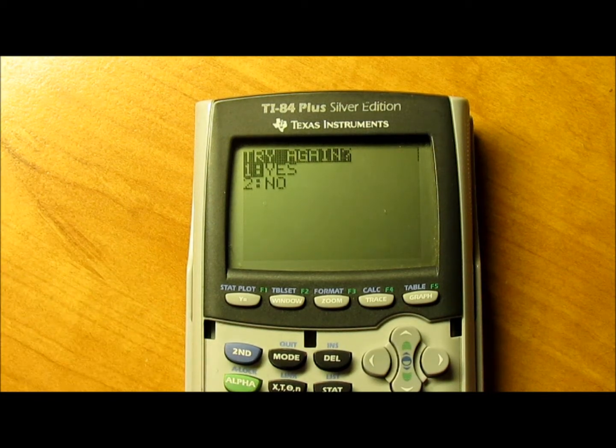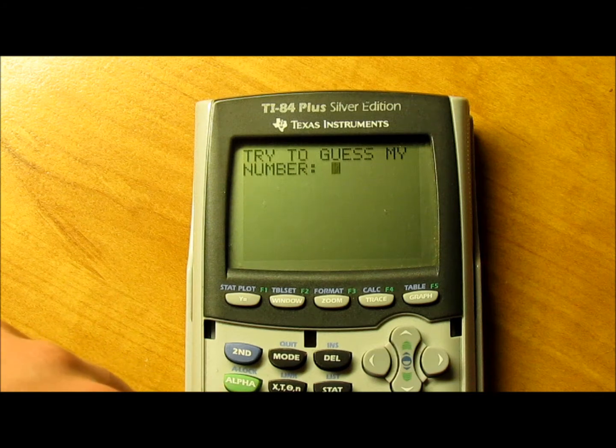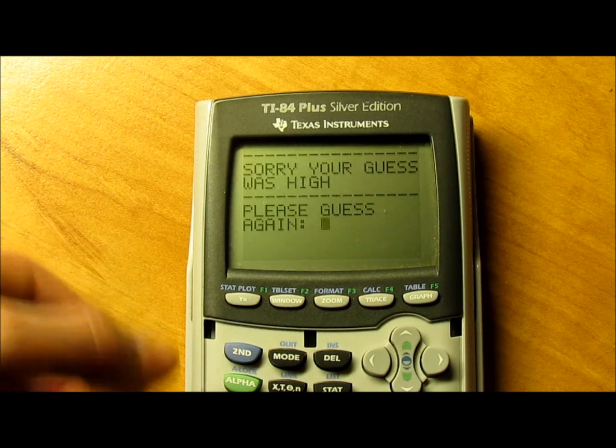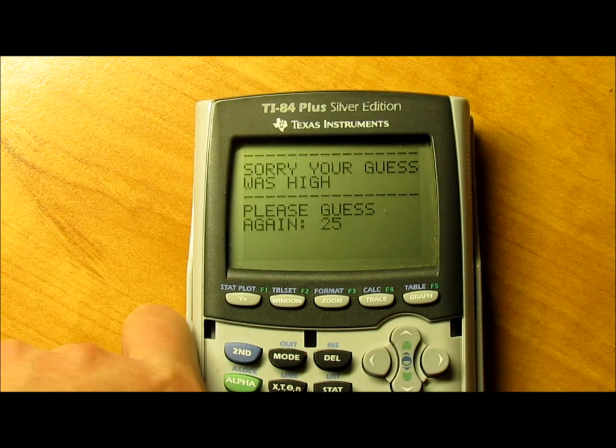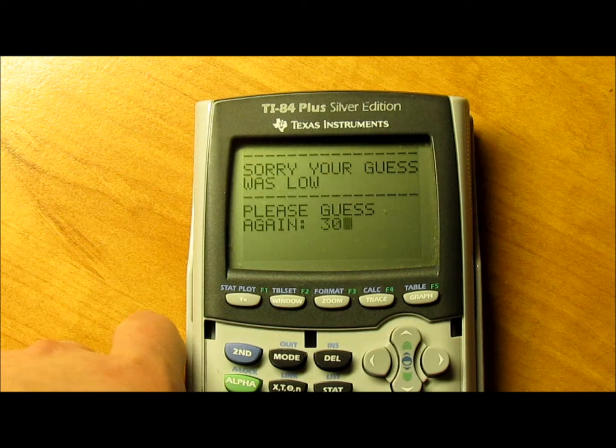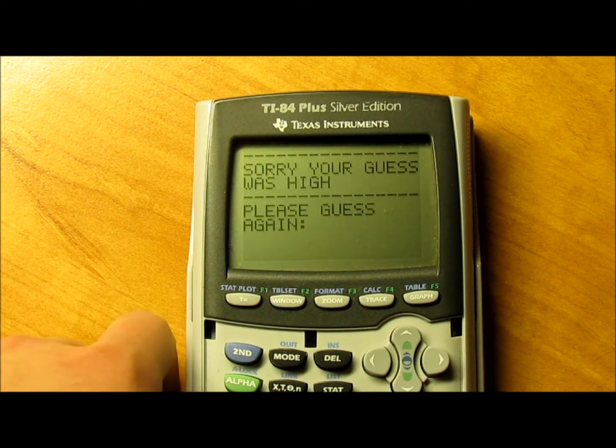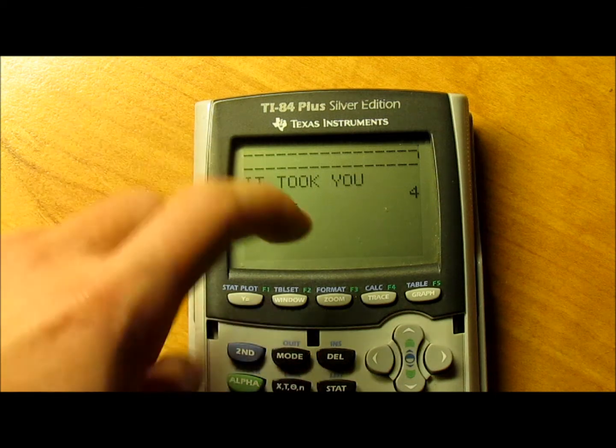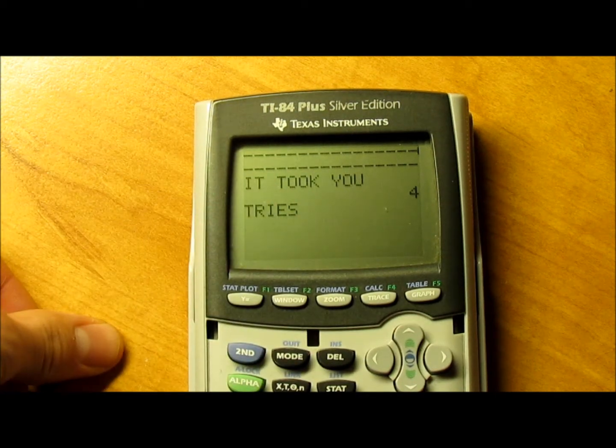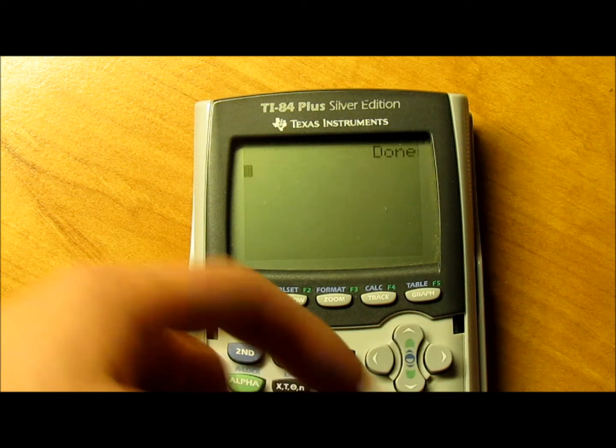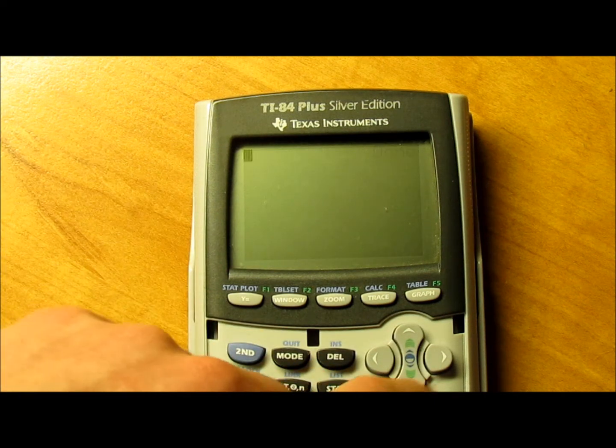To show you it picks a random number, I'll choose yes. I'll hit 50, and this time it's high. So 25, that was low. 30, high. 28, and it took me four tries. Now it asks to play again, and if I say no, it exits the program.